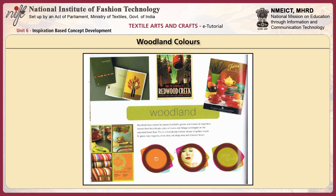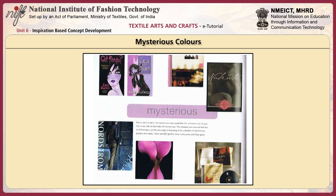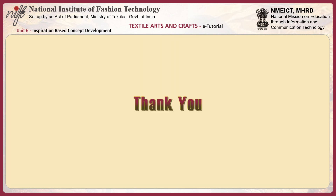Woodland hues extend far beyond inevitable greens and browns to inspiration derived from the intricate colors of leaves and foliage co-mingled on the autumnal forest floor — a dramatically intense mosaic of golden russet, fir green, magenta, citron, fiery red, deep wine and chestnut brown. Mid to dark in value, these mysterious hues symbolize the unknown and the intrigue that never fails to fascinate the human eye, with unusual, beguiling mixtures of enchanting purples, wines, otherworldly greens, deep aubergines and hazy greys. This section reviewed the role of color in creative designing.